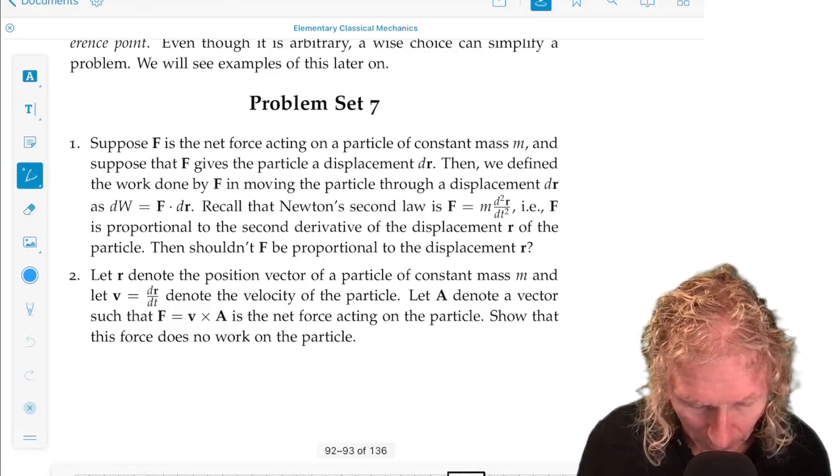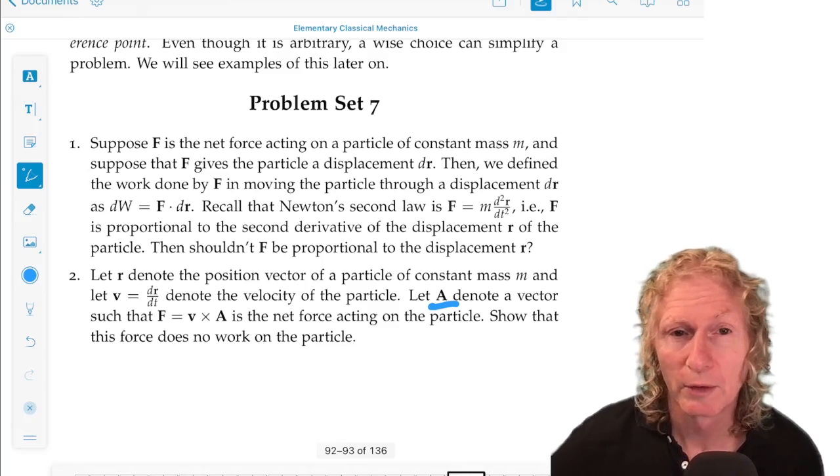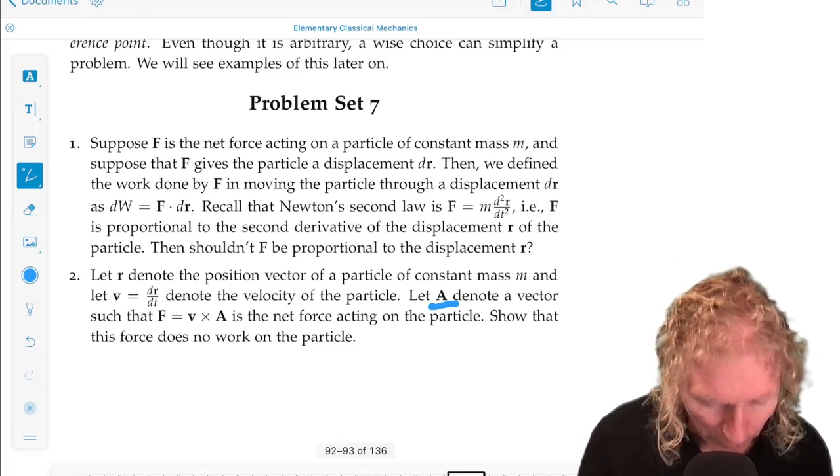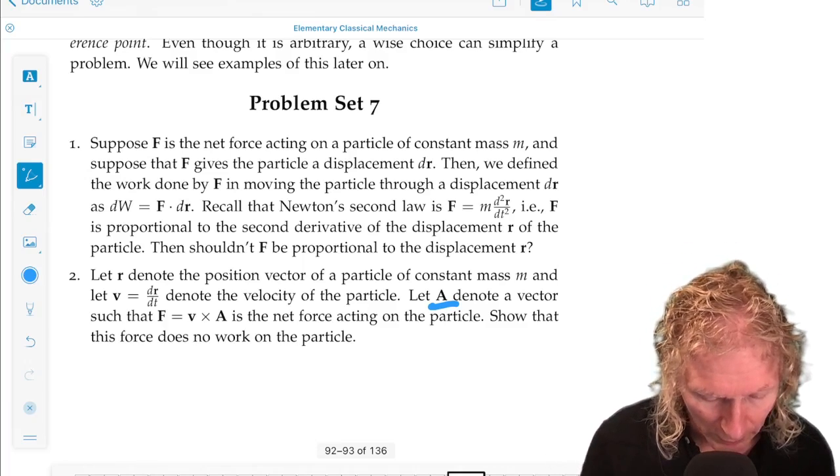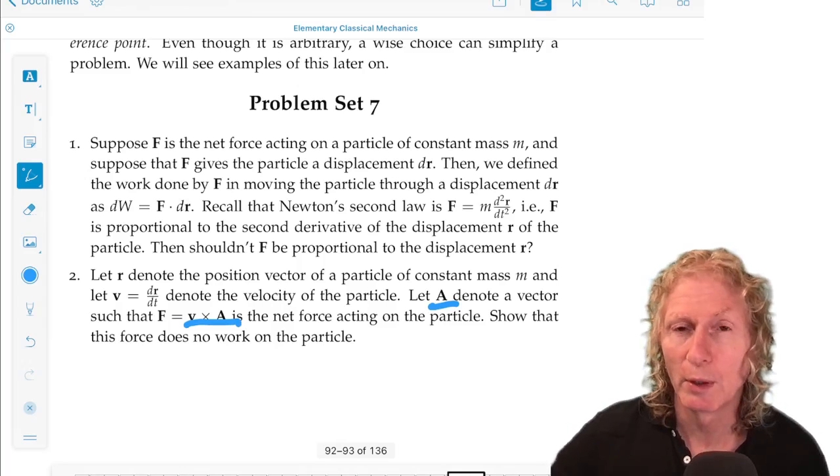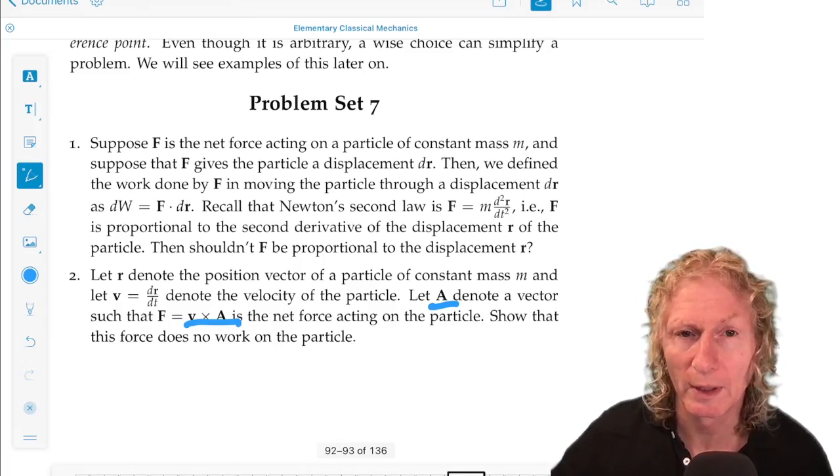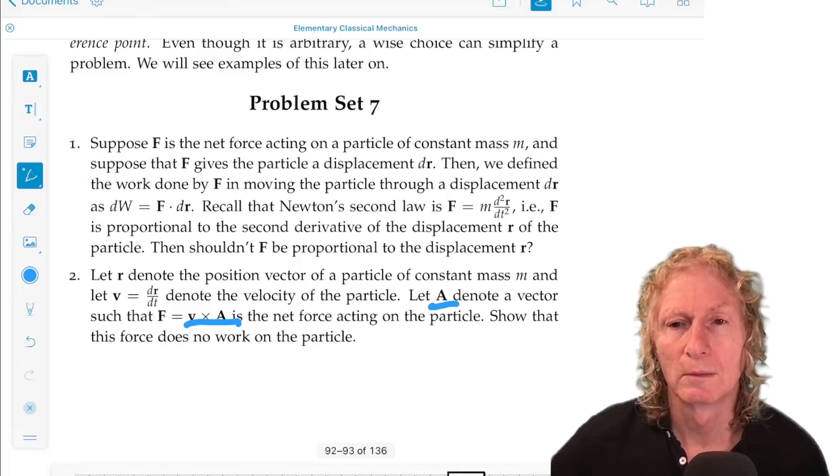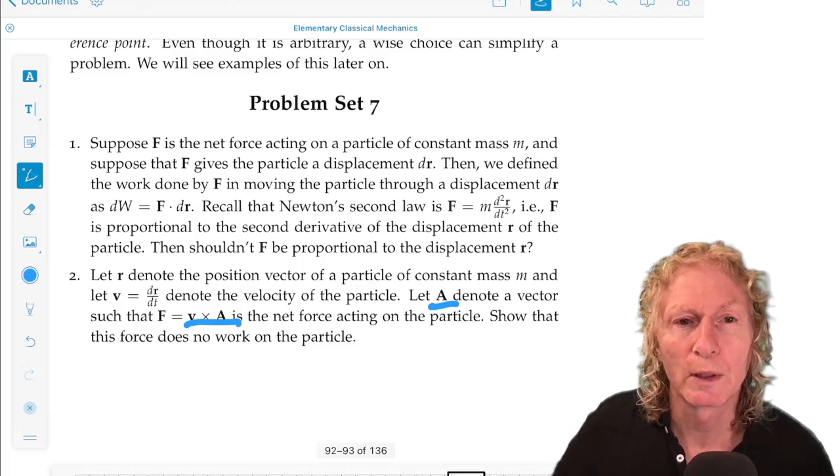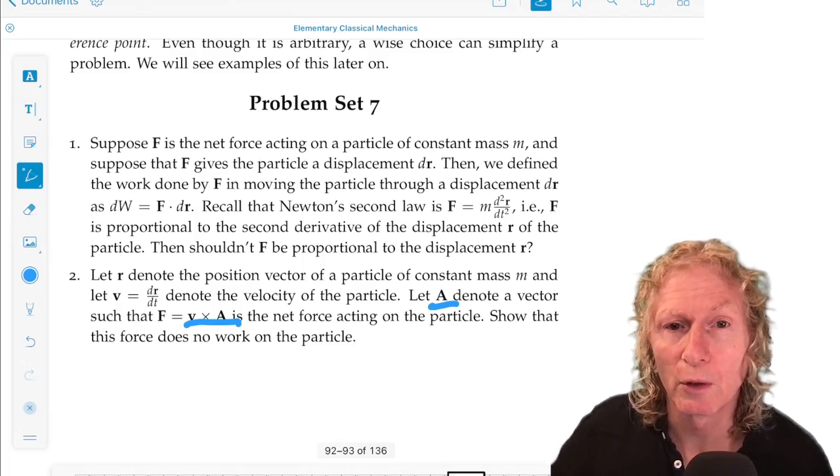denote a vector such that the force is velocity vector cross this vector a. And suppose that force, v cross a, is the net force acting on the particle. Then show that this force does no work on the particle.